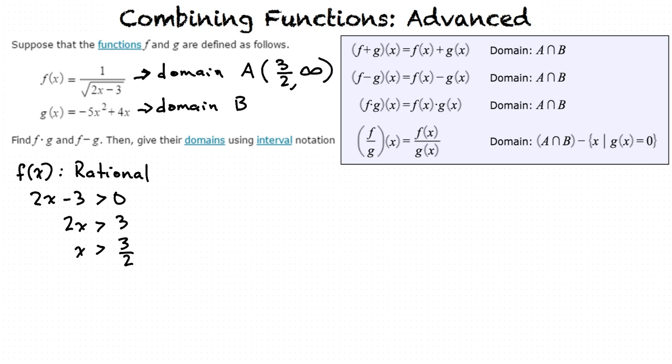Now we'll find the domain of g of x. What kind of function is g of x? I see a square root in it, so is it a quadratic function? Yes, and what kind of graph does a quadratic function make? A parabola? Yes, a parabola, which has the domain negative infinity to infinity because a parabola contains all real numbers.